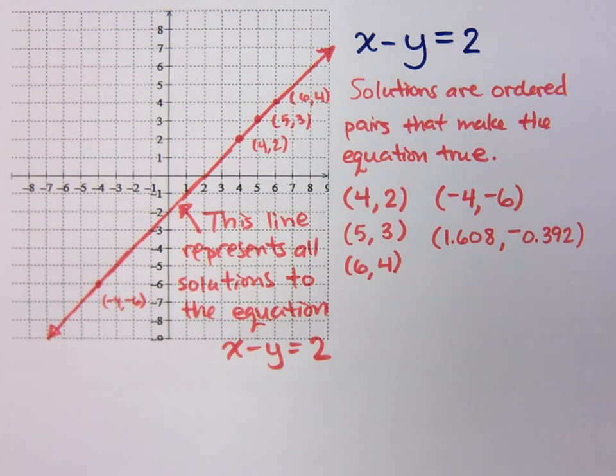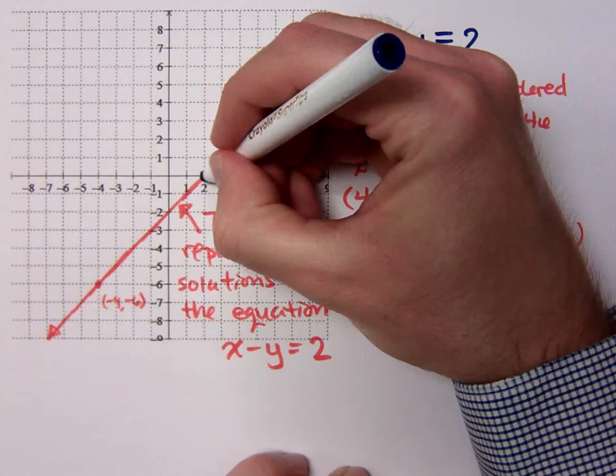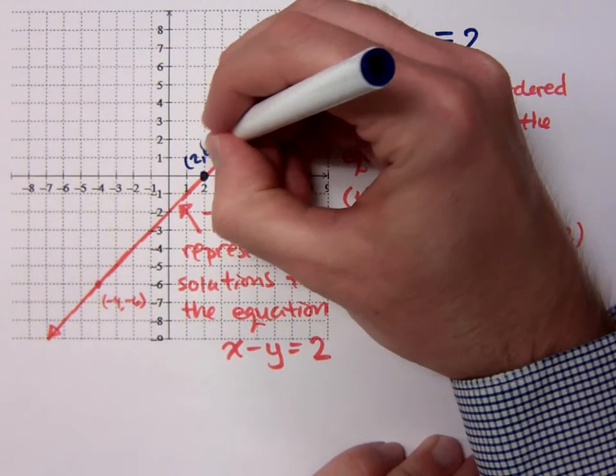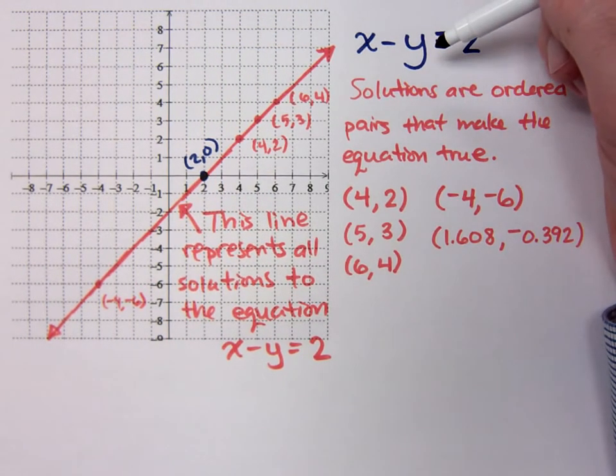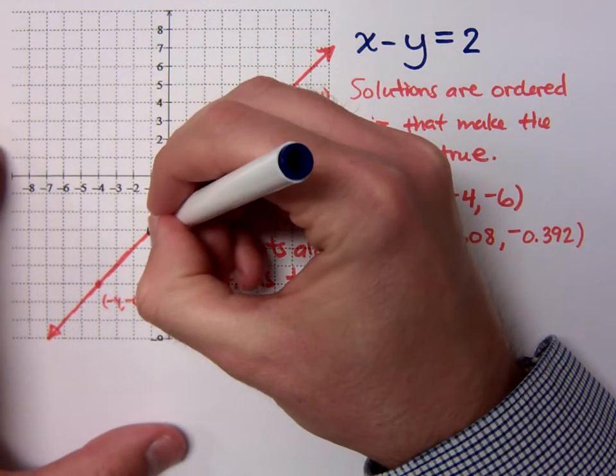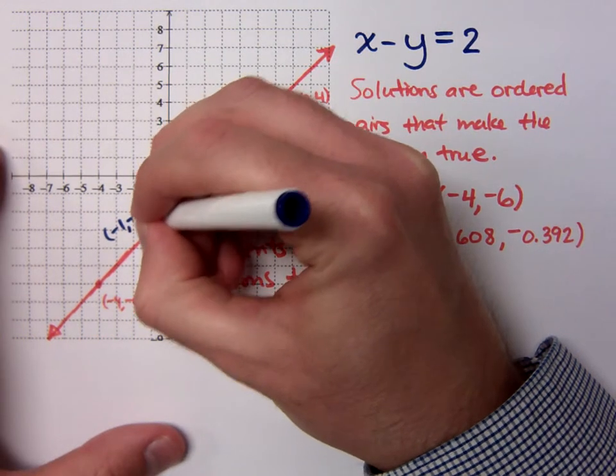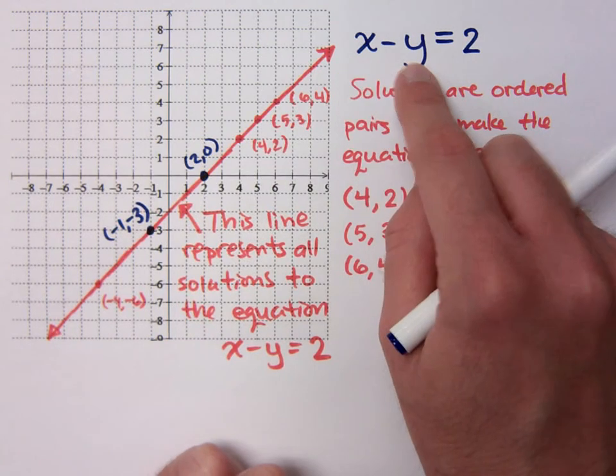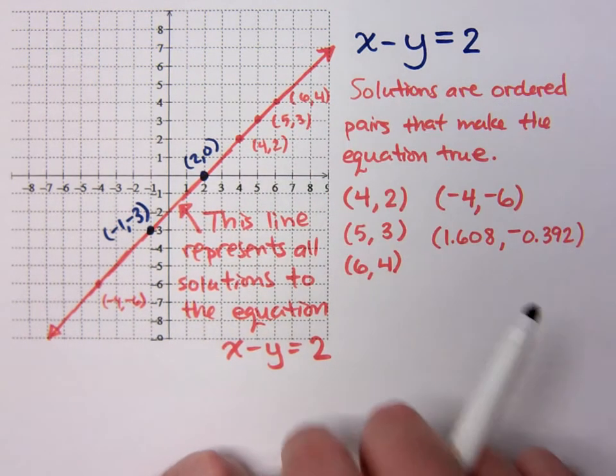So, any point that's on this line should be a solution. Now, we could pick off some other points here and see if that's really true. This guy right here, what are his coordinates? 2, 0. That's the ordered pair 2, 0. So if I plug in 2 and 0, it's 2 minus 0, 2. Right, that works out. If I plug in this guy right here, this guy has coordinates of negative 1, negative 3. If I plug in negative 1 and negative 3, that gives me a positive 2. So anything on this line is a solution.